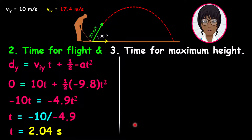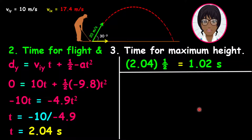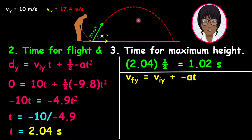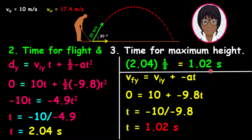Now let us calculate the time when the ball reached its maximum height. Remember that the time at which the ball reaches the maximum height is half the total time of flight. Therefore, this equals half of 2.04 seconds, which is 1.02 seconds. Let us prove this another way using the formula: final vertical velocity equals the initial vertical velocity plus negative acceleration multiplied by time. Remember that the final vertical velocity is 0 at the maximum height, where the ball is momentarily at rest. Therefore, 0 equals 10 plus negative 9.8 multiplied by time, giving time equals negative 10 divided by negative 9.8, hence 1.02 seconds. This proves that the time for the flight is twice the time to reach the maximum height.